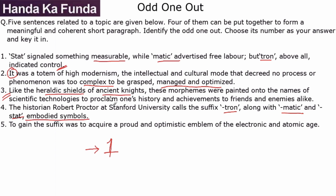Sentence four reads: 'The historian Robert Proctor at Stanford University calls the suffix tron, along with matic and stat, embodied symbols.' This is where the suffixes are being introduced. These suffixes could be the heraldic shields or the totem of high modernism being talked about. This is essentially the introduction of the idea. So the idea of suffixes is introduced in sentence four, and what each of them means is explained in sentence one — meaning four and one are definitely a logical couple in my paragraph.